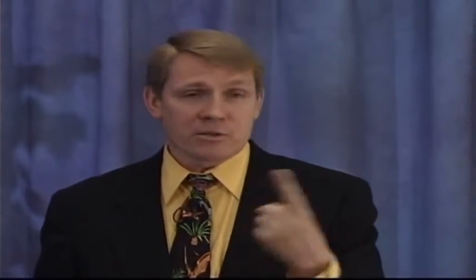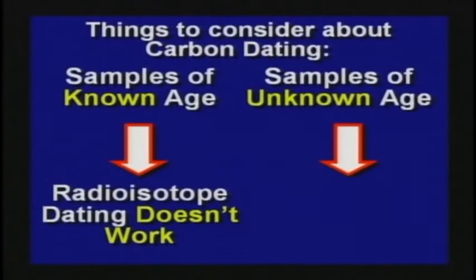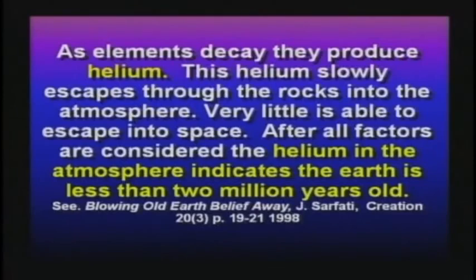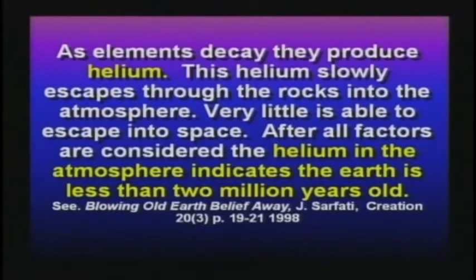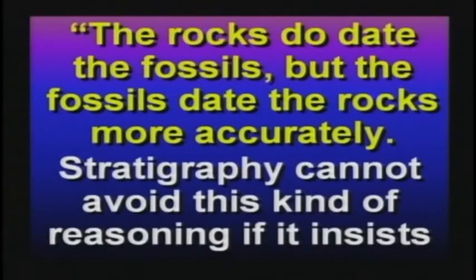Here are things to consider about carbon dating: when you test a sample of known age, it doesn't work. If you test a sample of unknown age, it is assumed to work. That's not science. As things decay, they produce helium. The amount of helium in the atmosphere is only enough to account for a few thousand or a few million years, not billions. There's a book called The Mythology of Modern Dating Methods by ICR. The rocks do date the fossils, but the fossils date the rocks more accurately — that's ludicrous. It's all based on circular reasoning. They've known that for centuries.